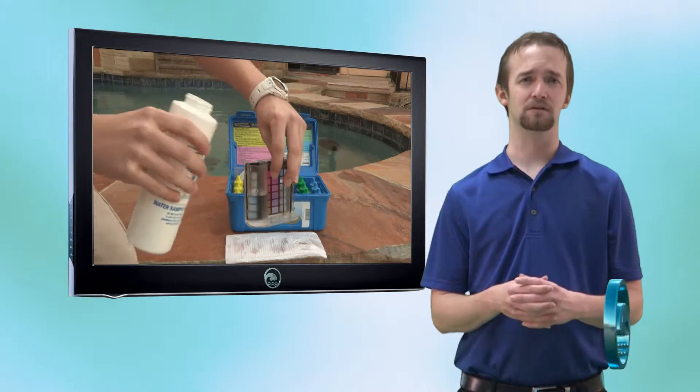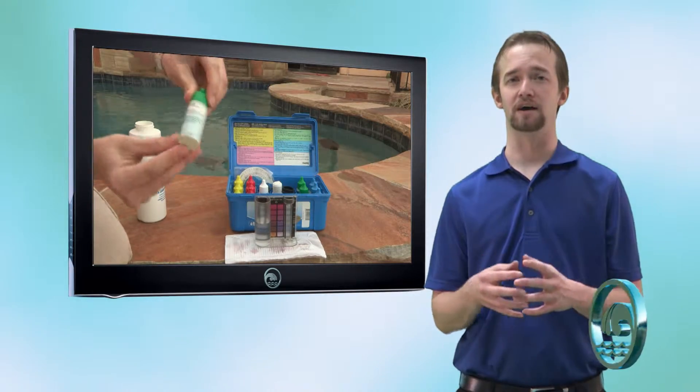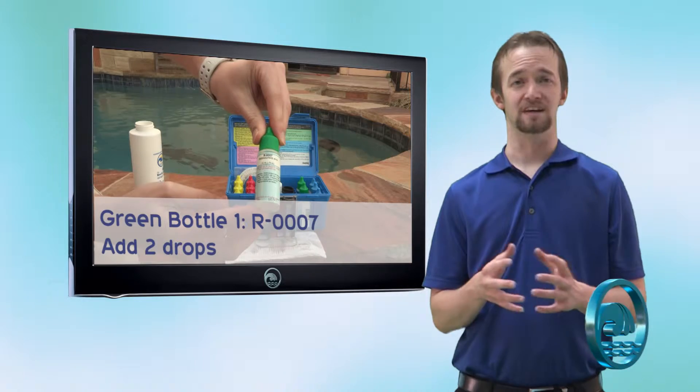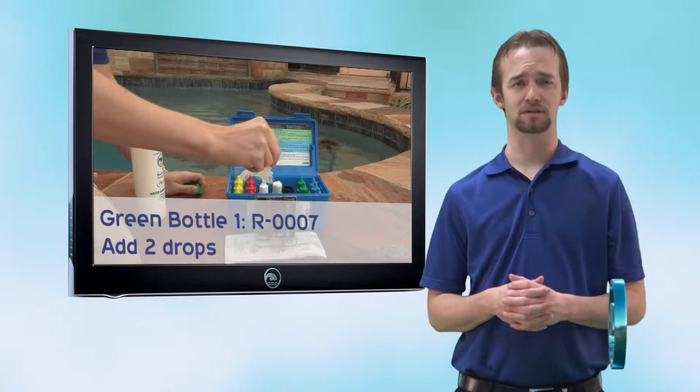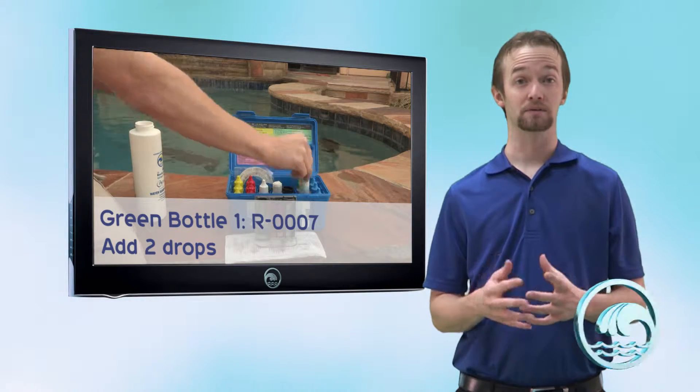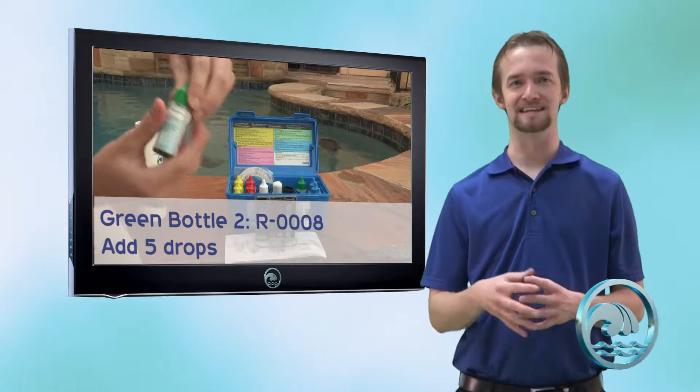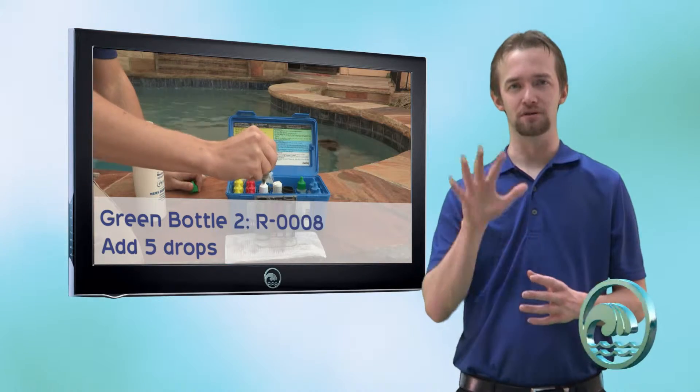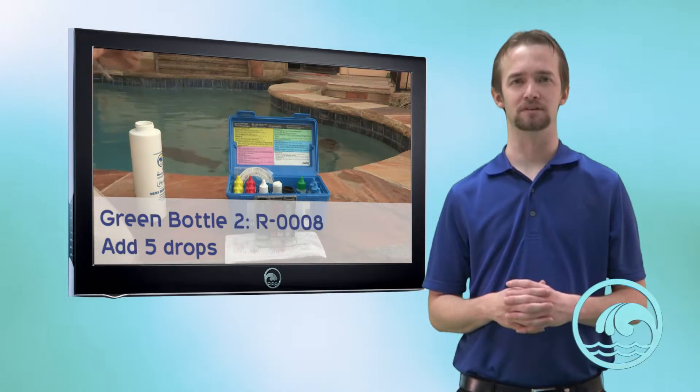Alkalinity test is the green bottles. Take the first green bottle, R0007, it's called thiosulfate. Take the R0007 and add two drops into that 25 milliliter water sample. Now take the next green bottle which is R0008, it's called alkalinity indicator. We need to do five drops of R0008 into that 25 milliliter water sample.